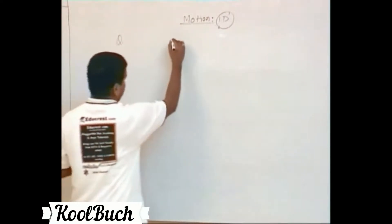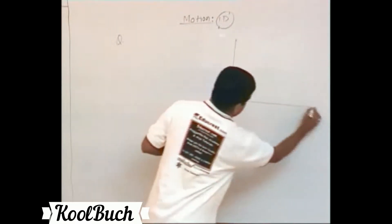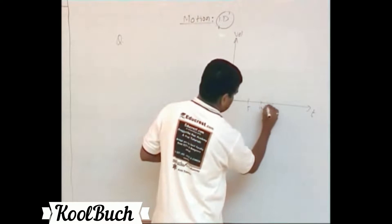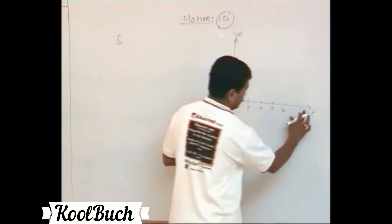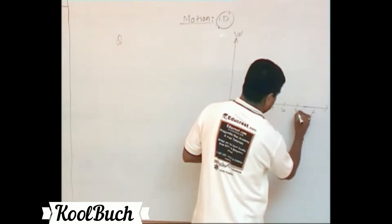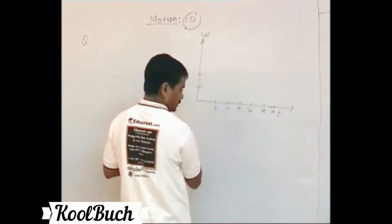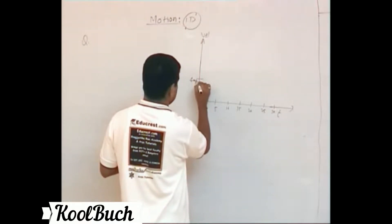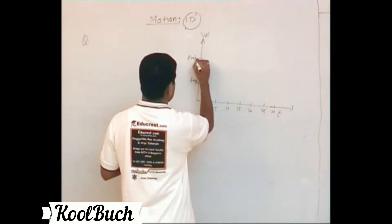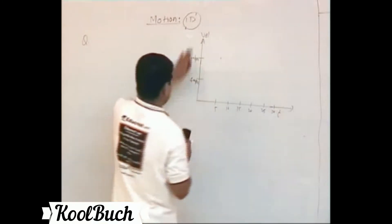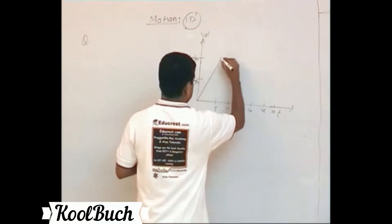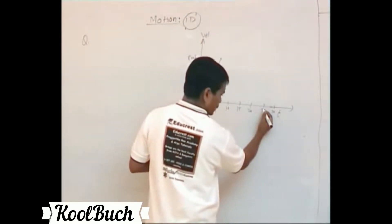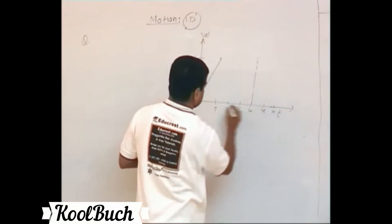We have a diagram given which is time versus velocity. The time axis shows 5, 10, 15, 20, 25, and 30 seconds. The velocity values are 4 meters per second and 8 meters per second. For the first 5 seconds, velocity is increasing from 0 to 8 meters per second, then for the next 15 seconds...